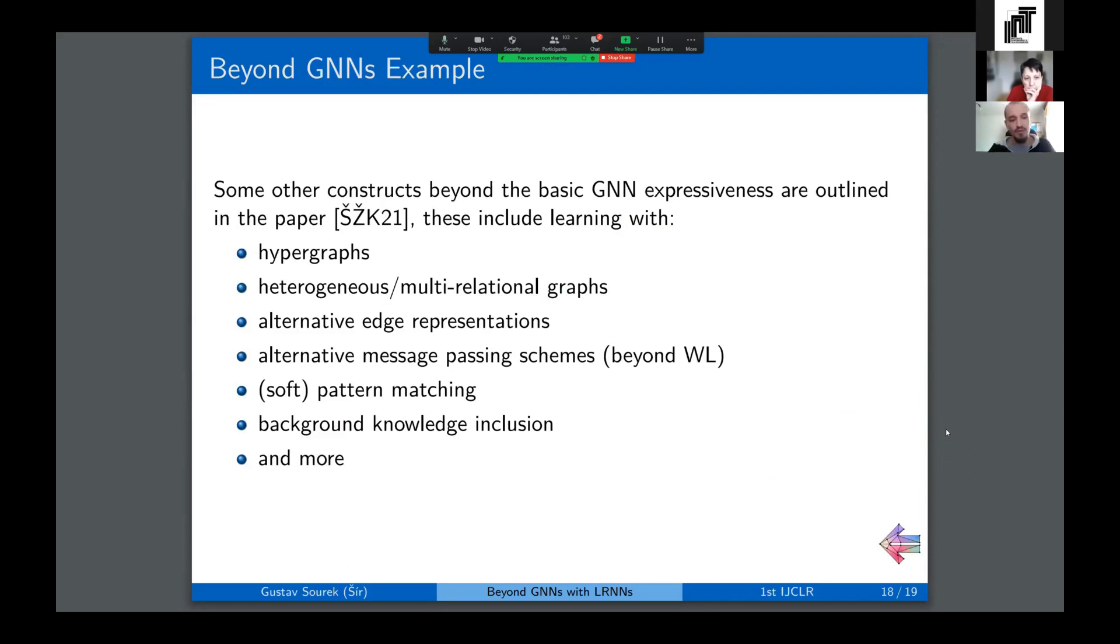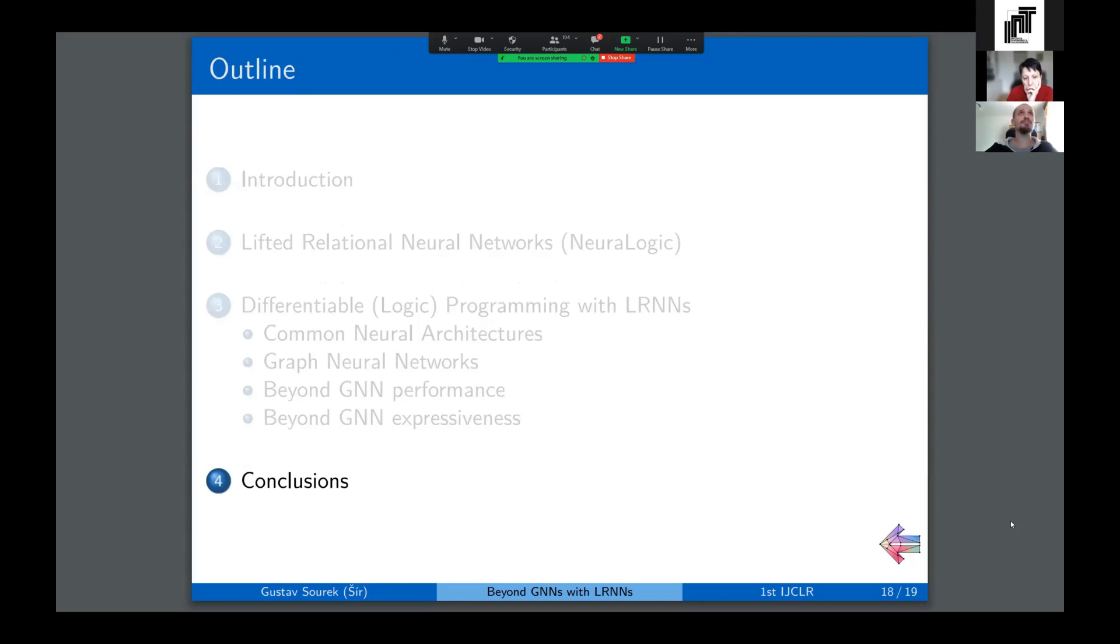Finally, and this is the most important message, the framework is by no means limited or even optimized for graph neural networks. You can probably imagine that you can use the inherent relational logic-based encoding to design all sorts of other stuff. Nothing stops you from playing directly with hypergraphs, heterogeneous multi-relational graphs, alternative edge representations, because edges in the graph are just logical objects, logical atoms just like the nodes. There is no difference between them, so you're not limited by that. You can design various extensions of the classic GNN message passing schemes beyond the classic Weisfeiler-Lehman. You can directly utilize pattern matching within the networks, and this is differentiable. And last but not least, you can include some logical knowledge if you have some in the templates.